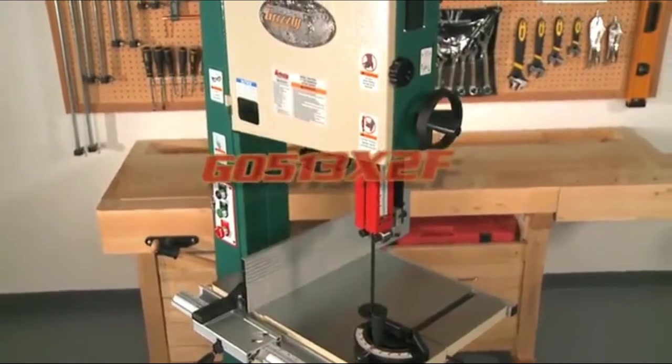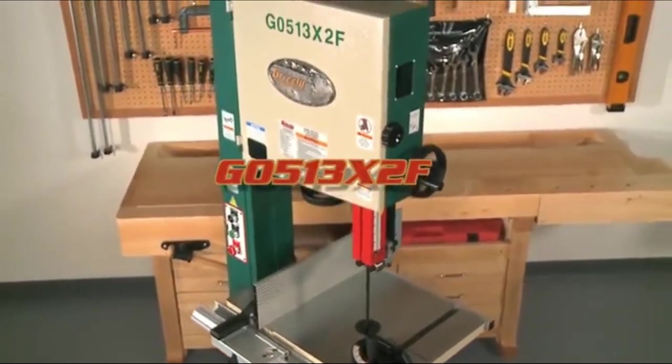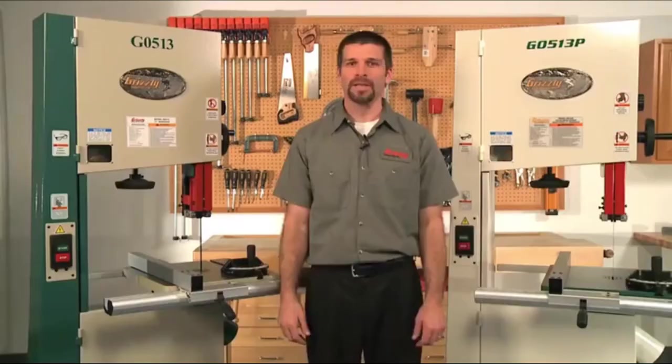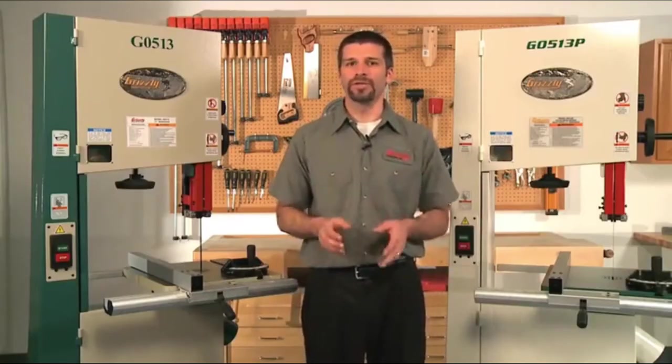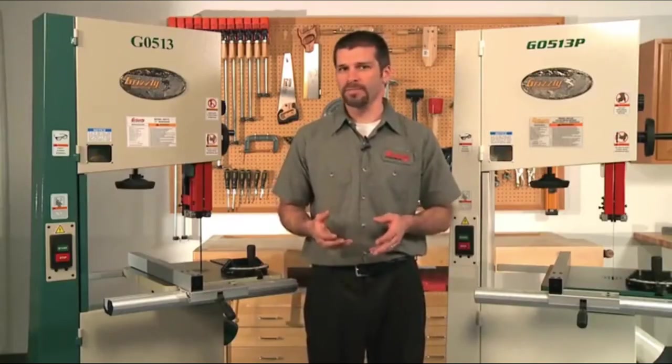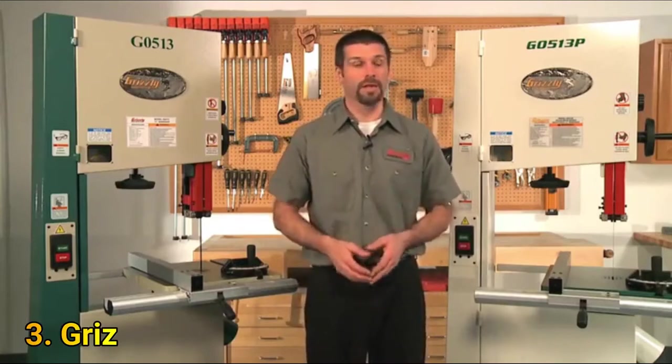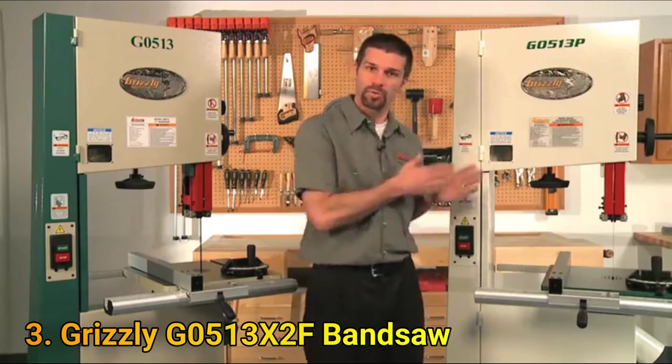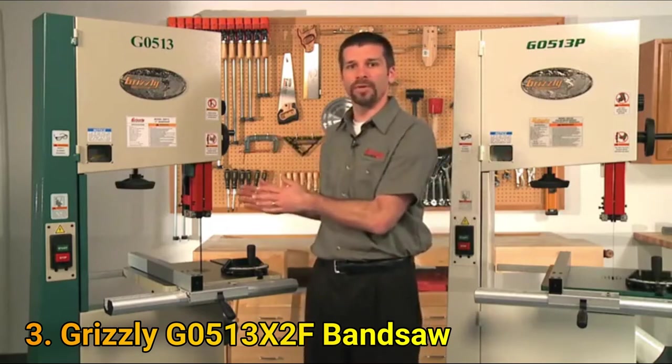And the G0513X2F. We'll cover the second set of four 17 inch bandsaws in the part 2 series coming soon. The G0513 and the G0513P are the same machine with the only difference being color. The P in the G0513P stands for our Polar Bear series which is white in color, while the G0513 is green and tan.